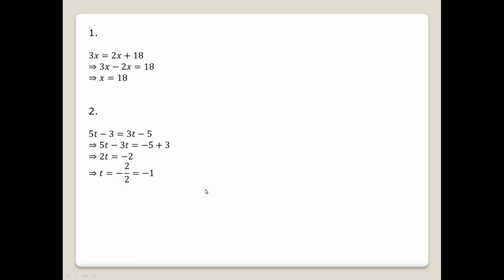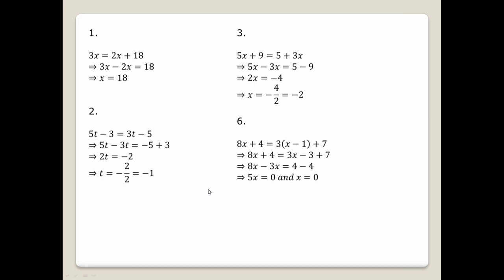Question number three: 5x plus 9 equals 5 plus 3x. Moving variables to one side: 5x minus 3x equals 5 minus 9, so 2x equals minus 4, giving x equals minus 2.